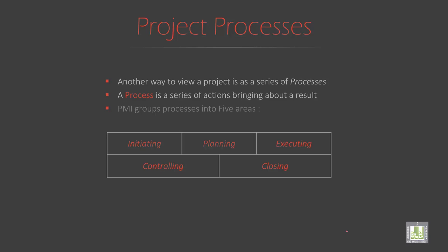The project process has various steps to be followed. It is a way to view the project as a series of processes — steps that bring about a result. When you give input, the result will be the output. There are five areas to consider: initiating, planning, executing, controlling, and closure.